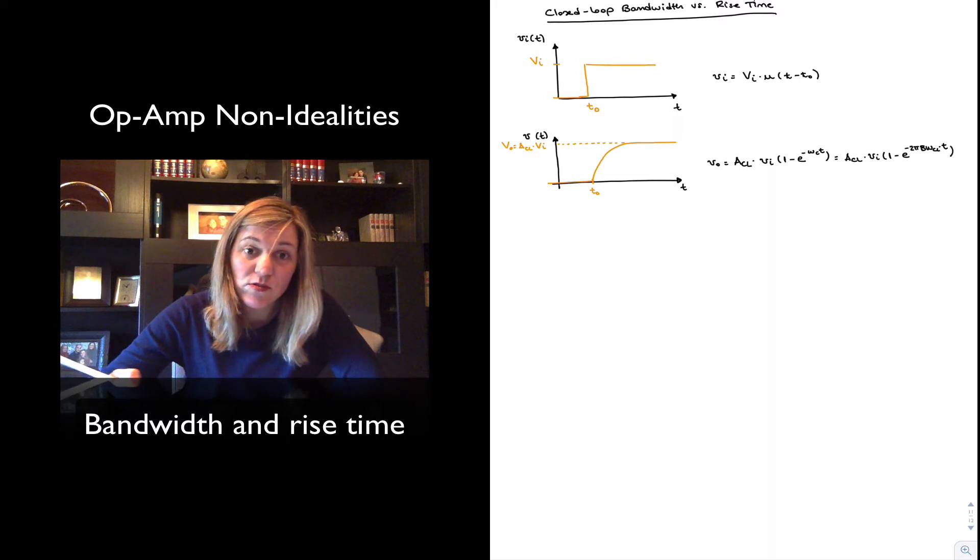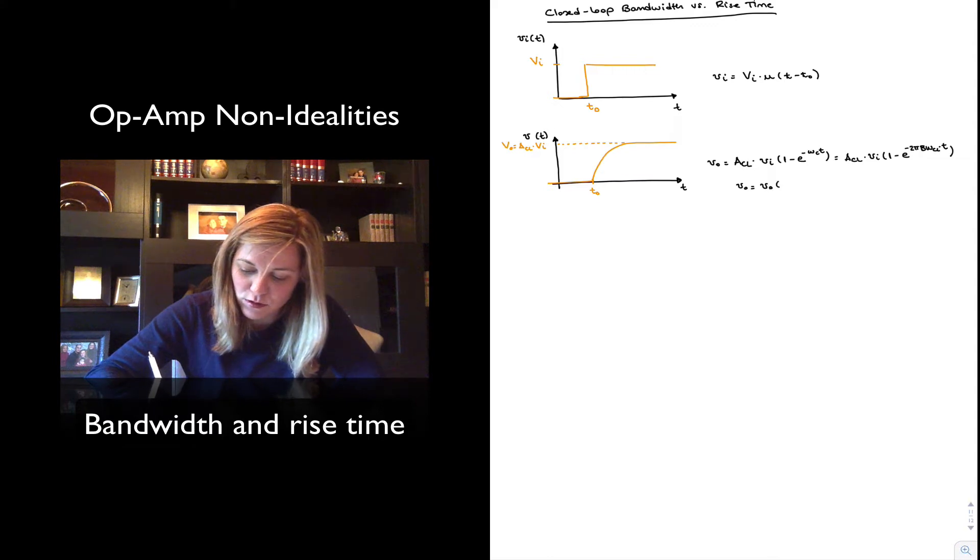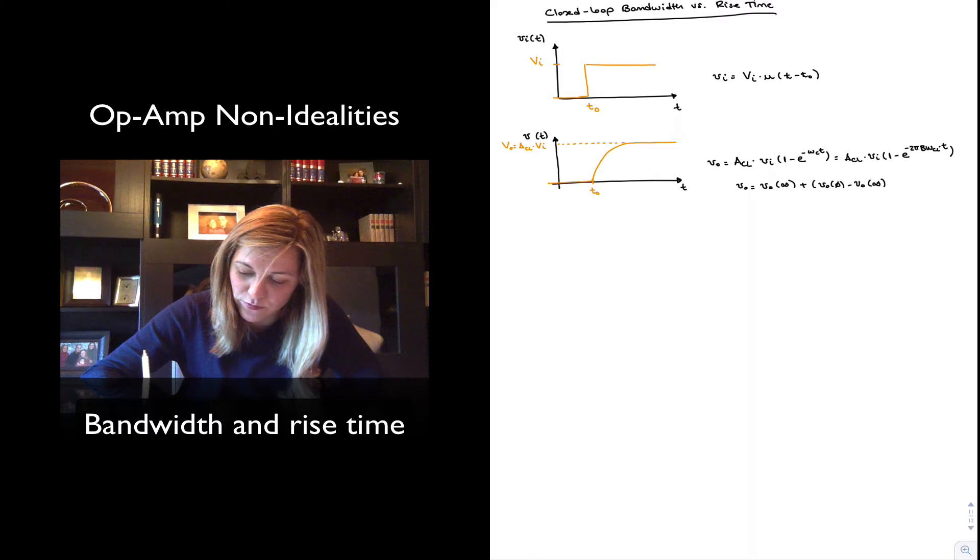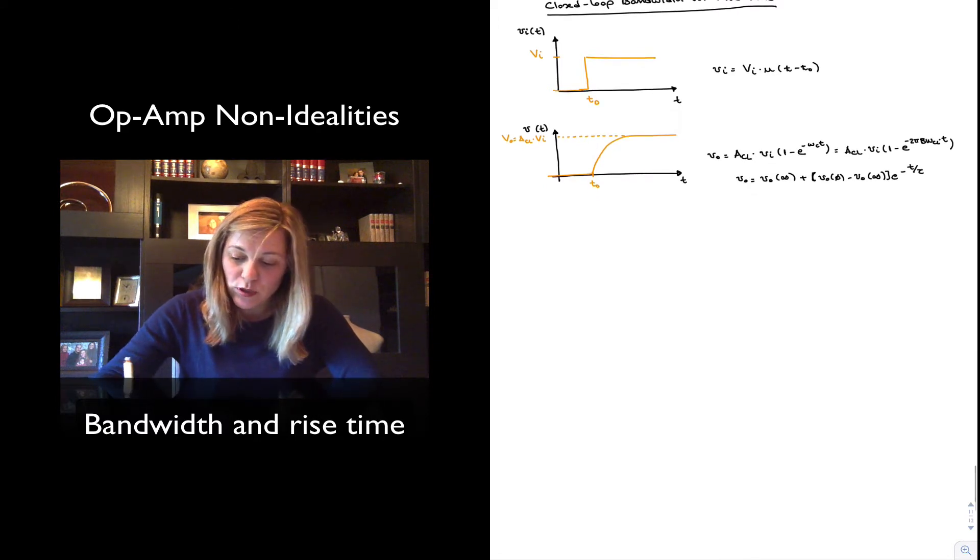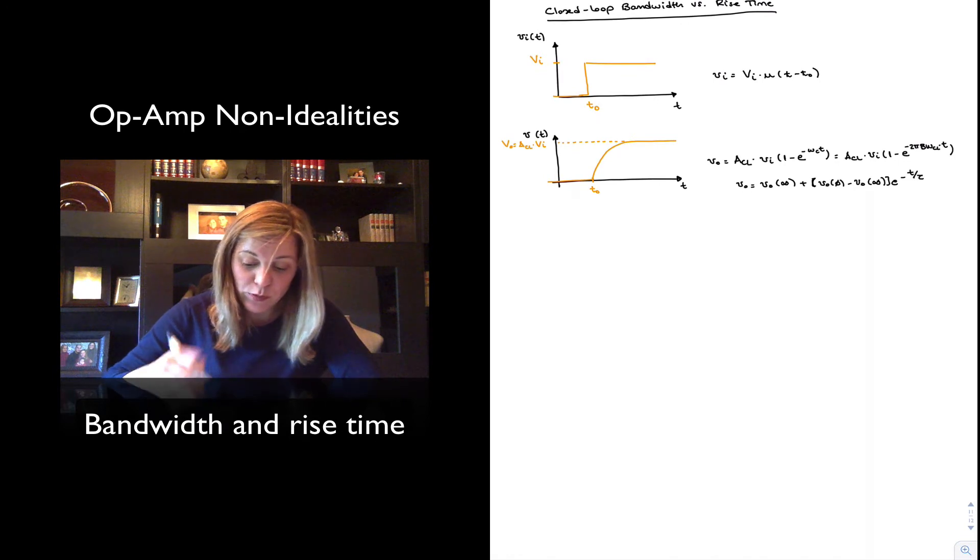And this just comes from the step response of a first order low pass filter. I don't know if you guys remember the general expression for the equation. It was V out is equal to V out infinity, the steady state value, plus the transient value V out of 0 minus V out of infinity e to the negative t divided by tau. So anyway, that's the relationship above is what it will be for this particular case.